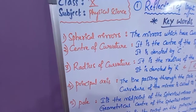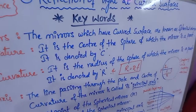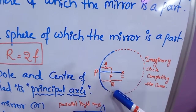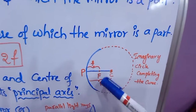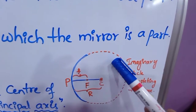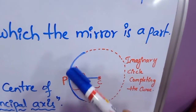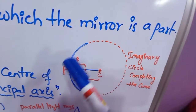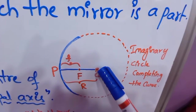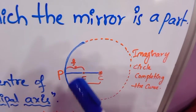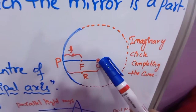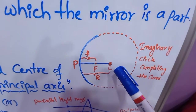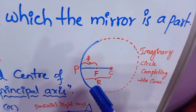Next: center of curvature. It is the center of the sphere of which the mirror is a part. Suppose I have drawn a curve shown in blue color here. Let us extend this line — let us draw an imaginary circle to complete the curve. When we complete the curve it becomes a sphere, and for this sphere there will be a center. This center of the sphere acts as the center of curvature, and it is denoted by capital C.